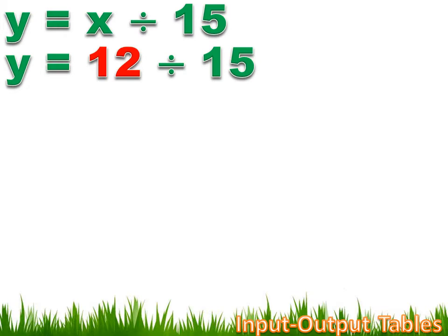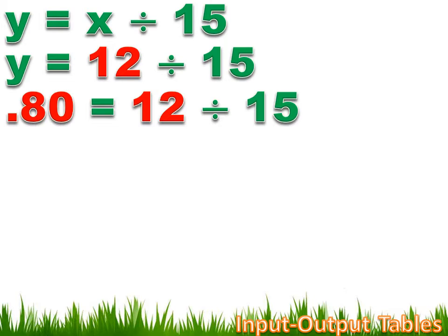Let's say you got 12 questions right on the test. Then we could replace X with 12, and the equation would read Y equals 12 divided by 15. Now we can figure out what the output, or what the Y value is, by just dividing 12 by 15, and we're going to get 0.80 equals 12 divided by 15.